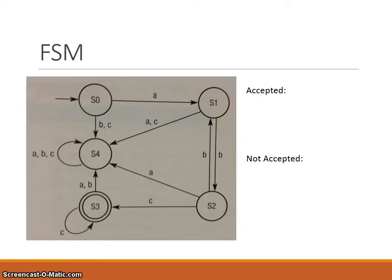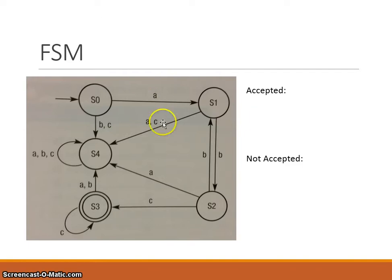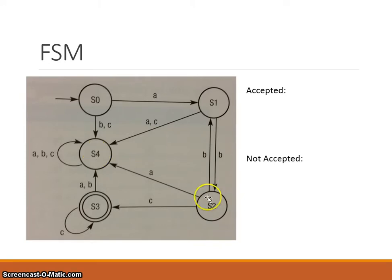Here is another finite state machine and state transition diagram. This shows 5 states — just numbered — and some letters that provide the input. From state 0, if we provide the input A, we go to S1. If we are in S1 and provide A or C, we go to state 4; if we provide B, we go to state 2. If we are in state 2 and provide A, we go to state 4; B takes us to state 1; C takes us to state 3.